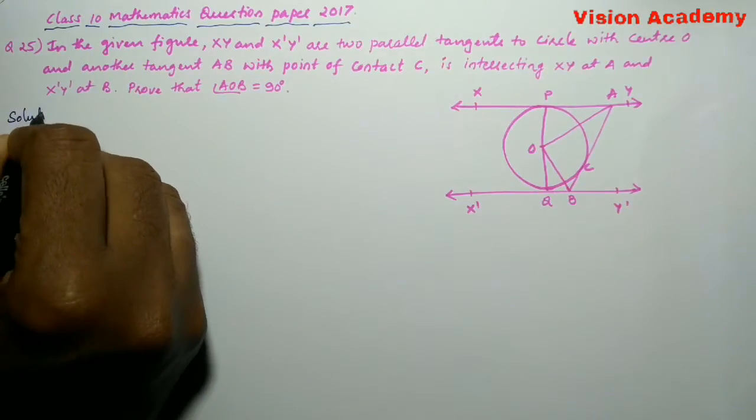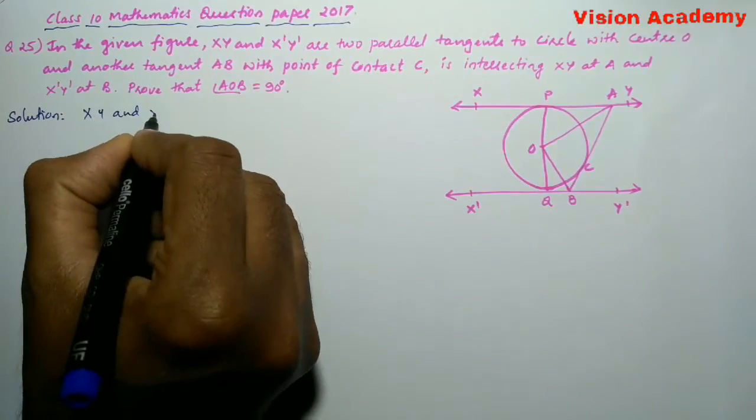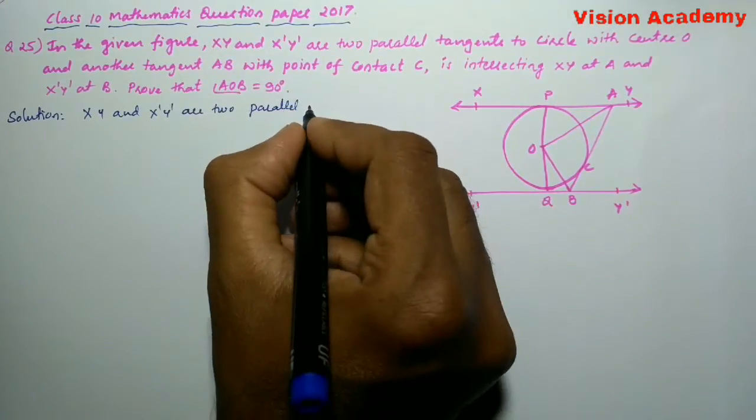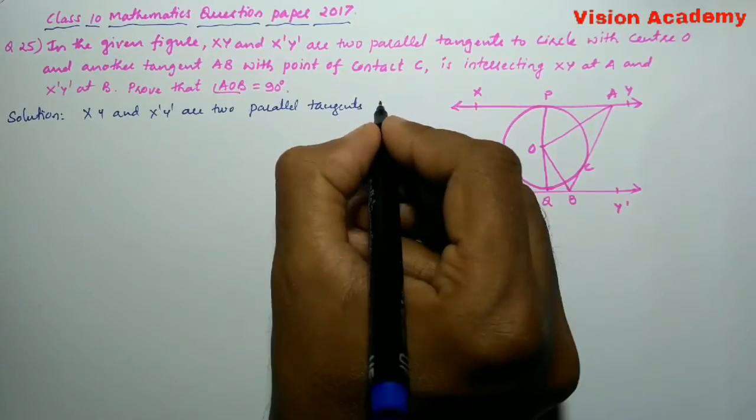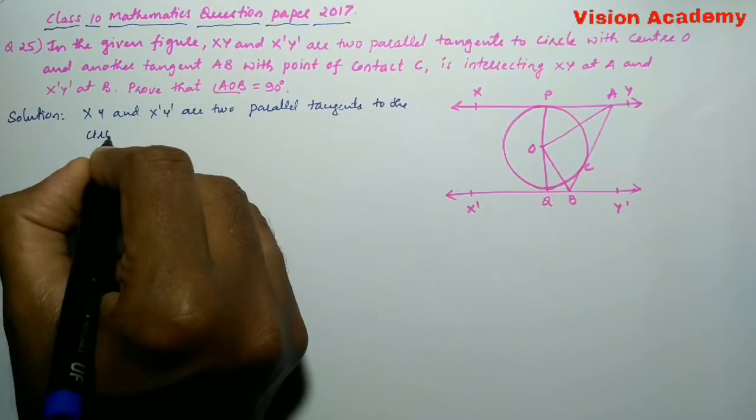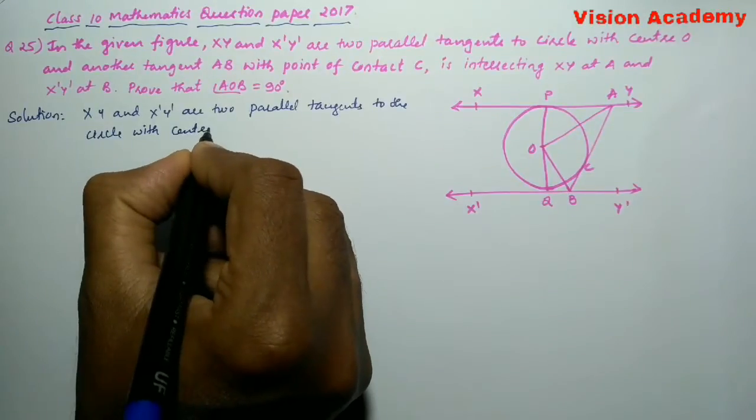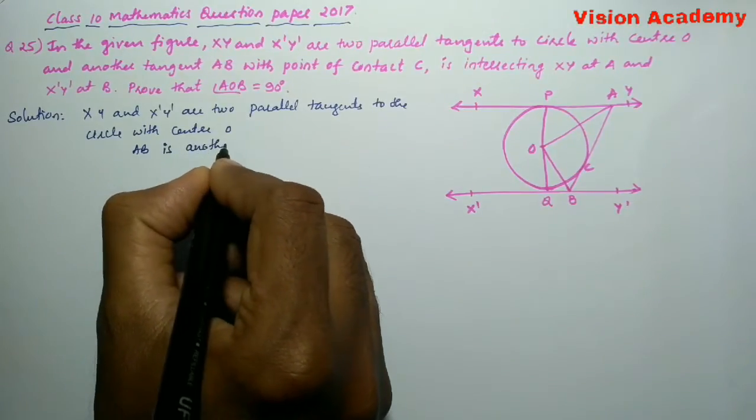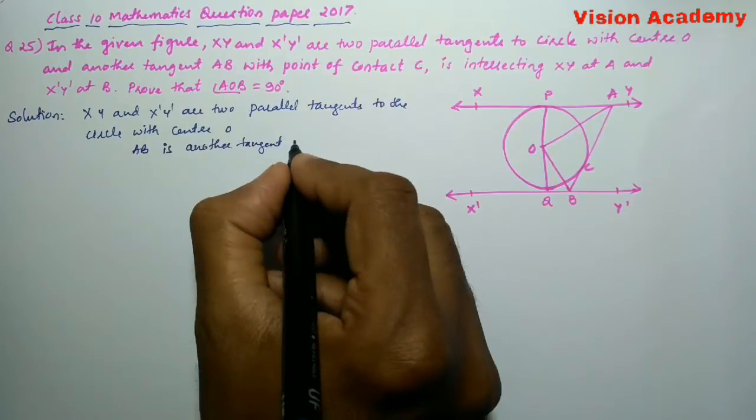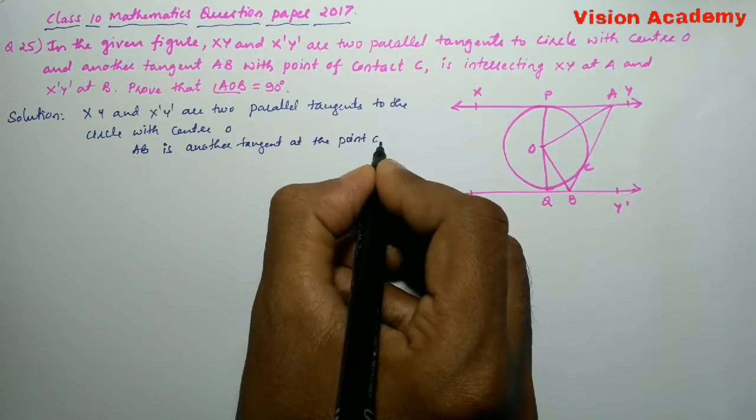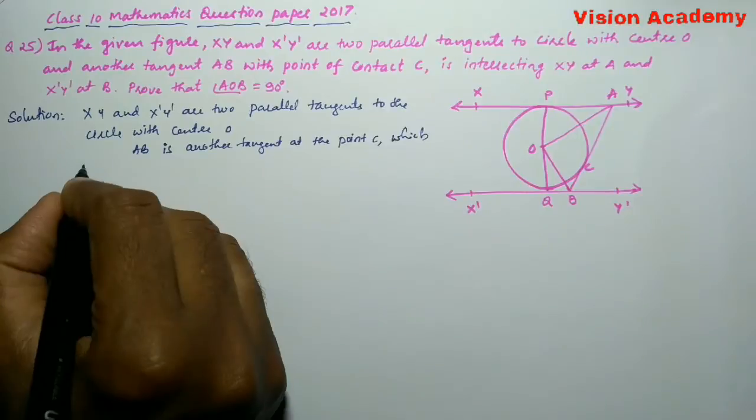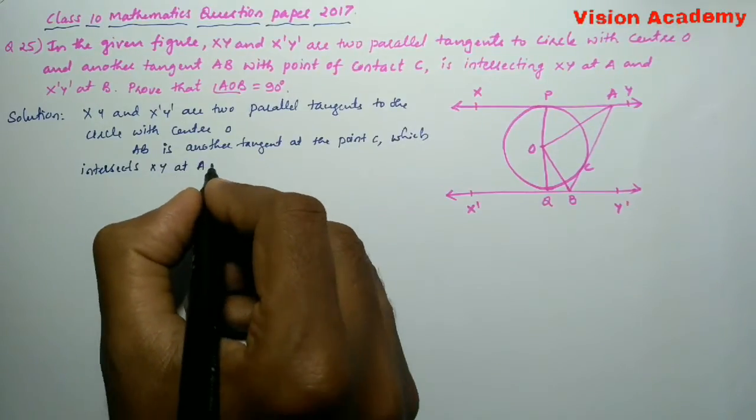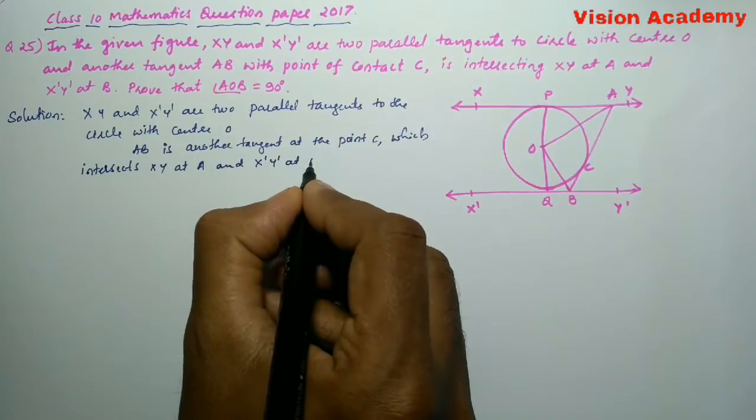Let us find the solution for the given problem. Here, XY and X'Y' are two parallel tangents to the circle with center O. AB is another tangent at the point C which intersects XY at A and X'Y' at B.